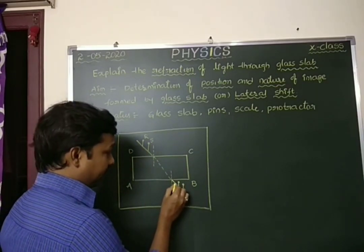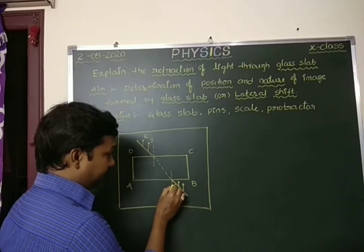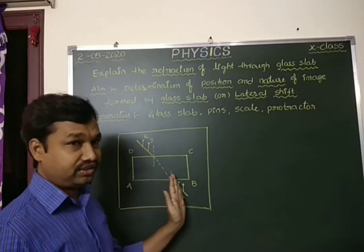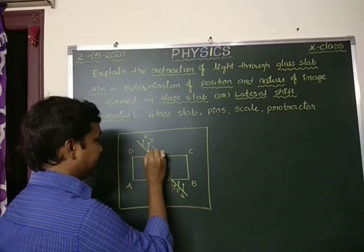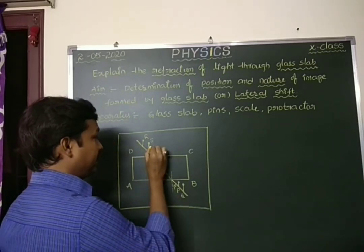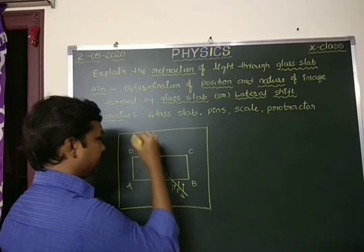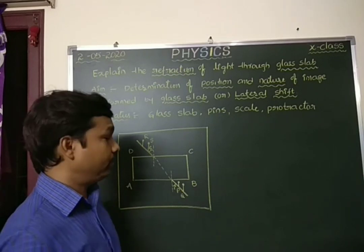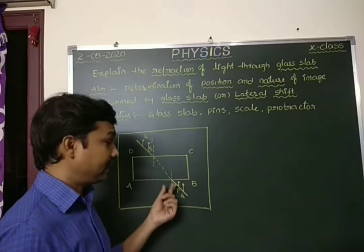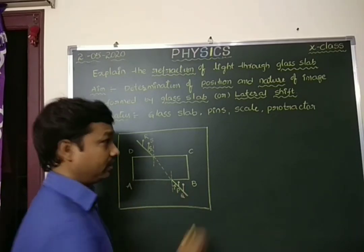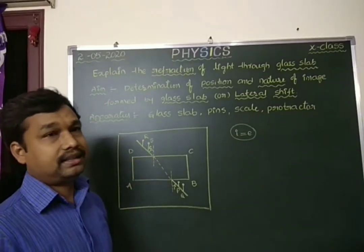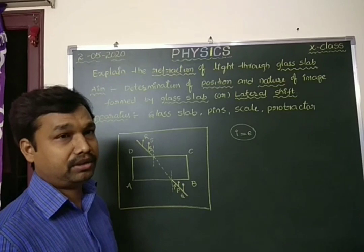Here we get the angle of incidence, because the angle between the normal and the incident ray is called the angle of incidence — named 'i'. Similarly, the light ray coming out of the glass slab gives us the angle of emergence — named 'e'. By using a protractor, we can observe that the angle of incidence and the angle of emergence both remain the same: angle of incidence equals angle of emergence.